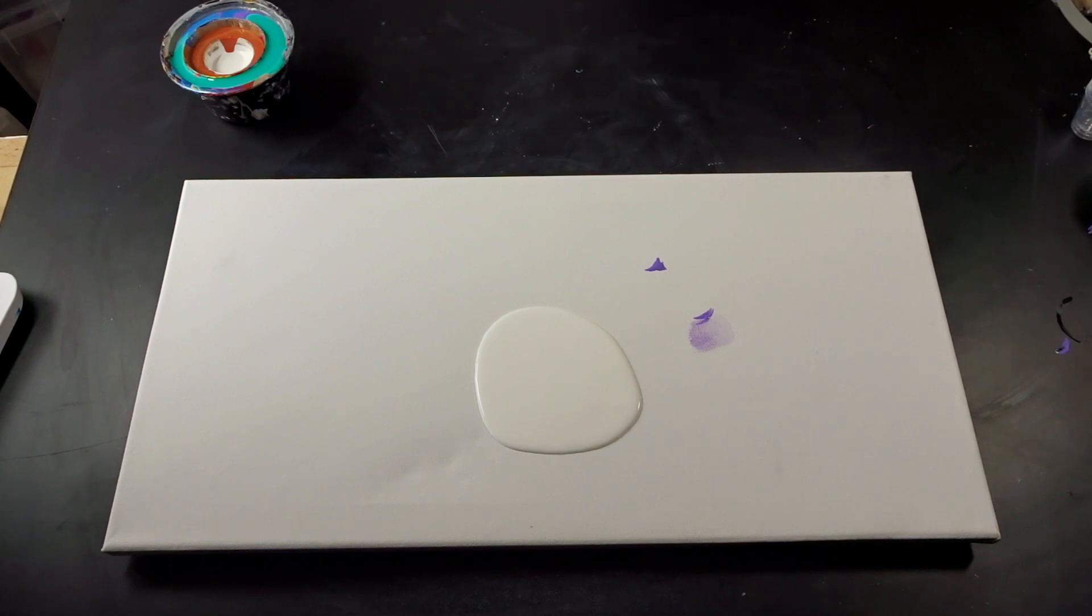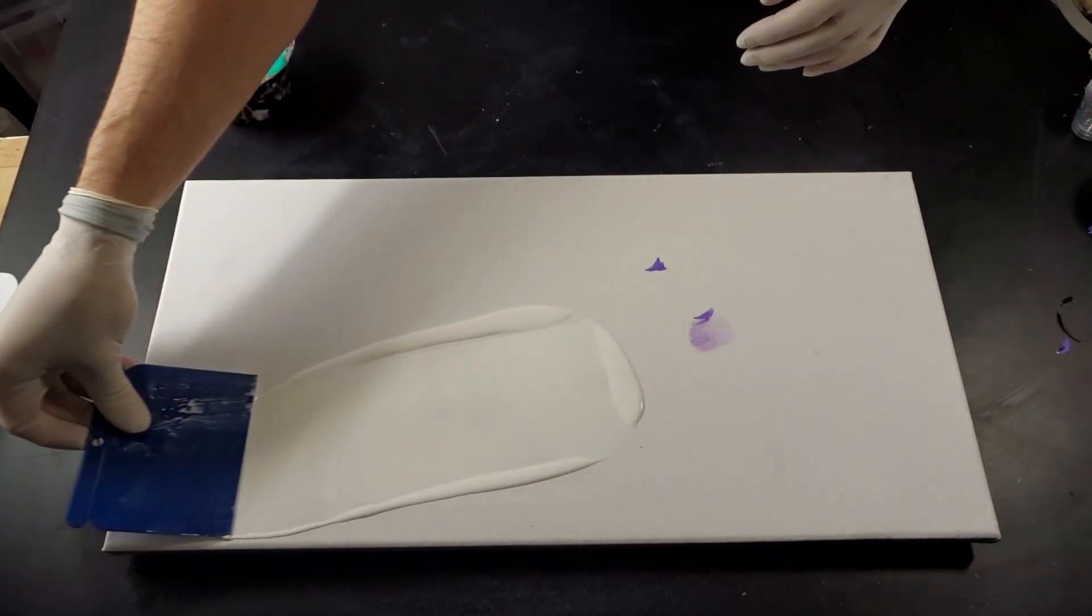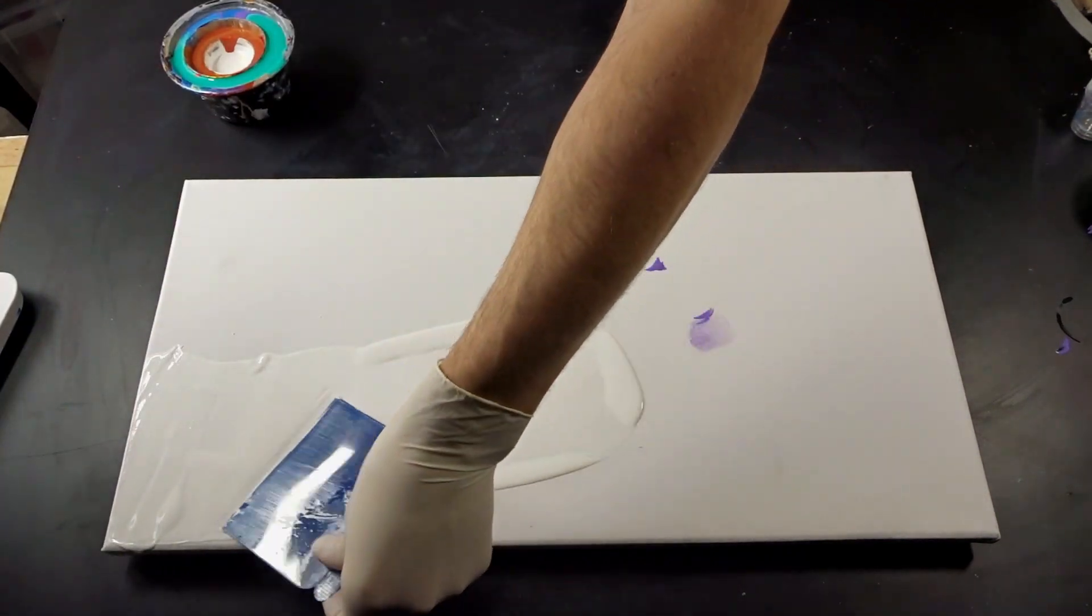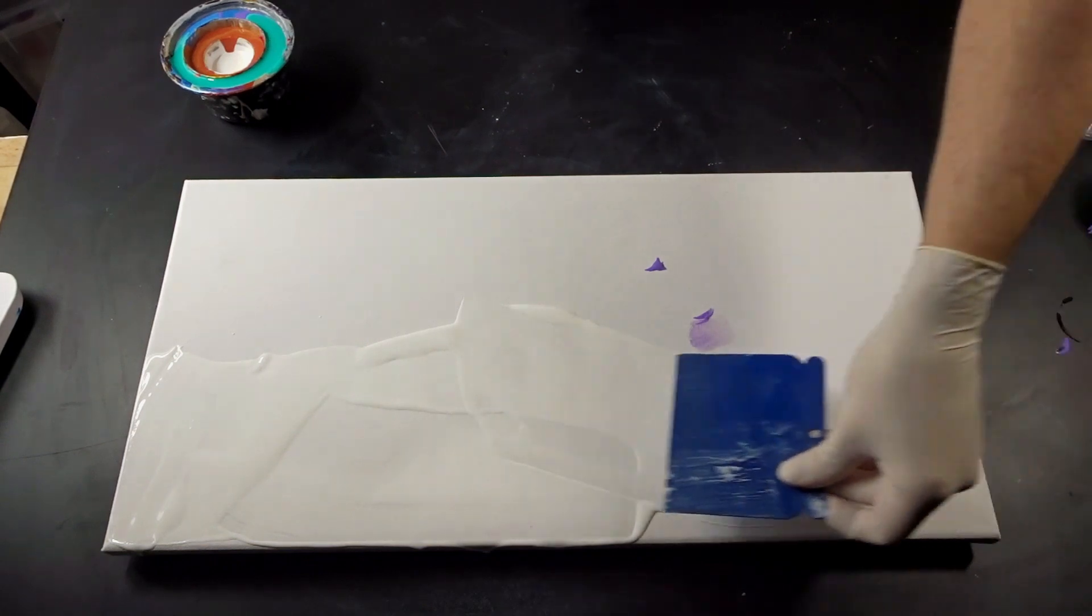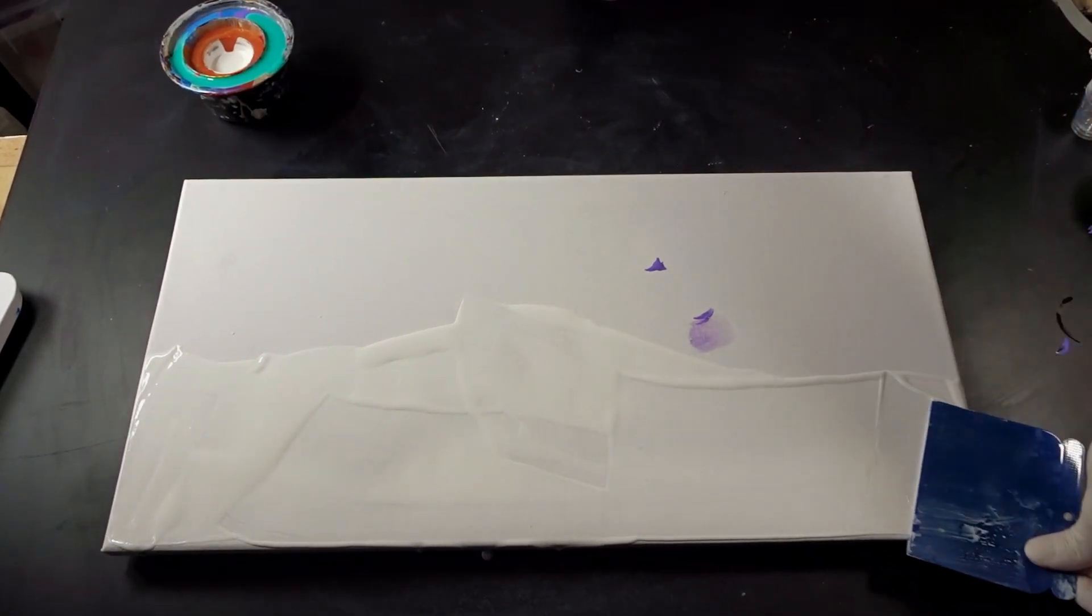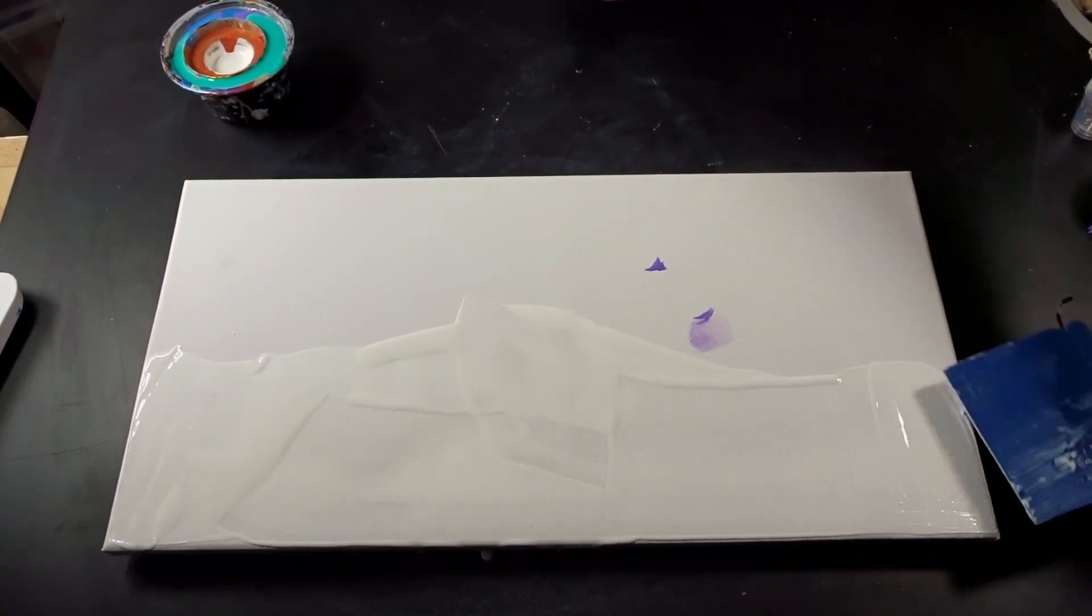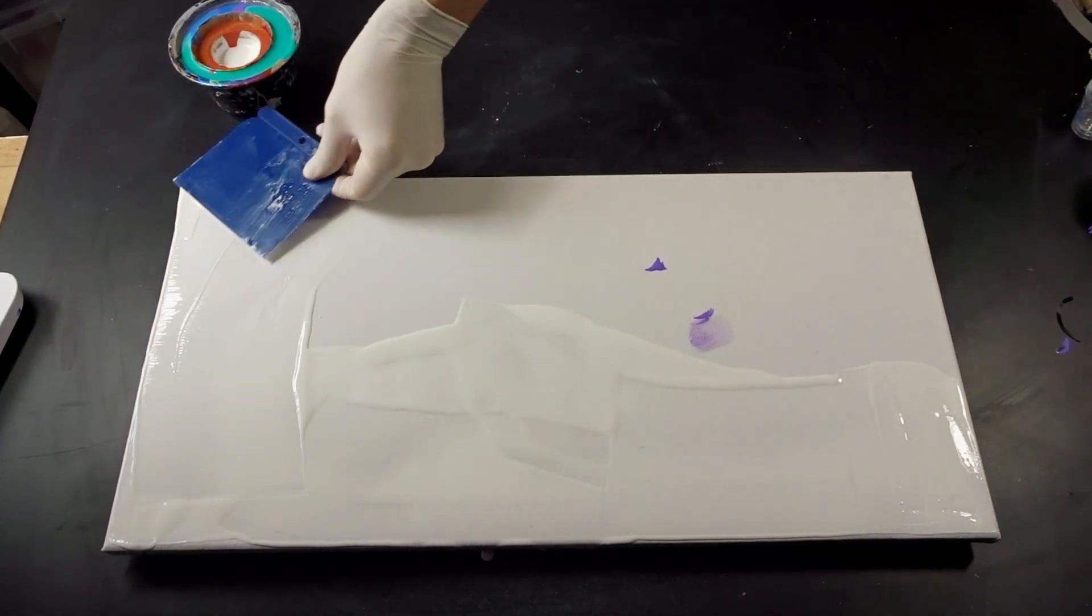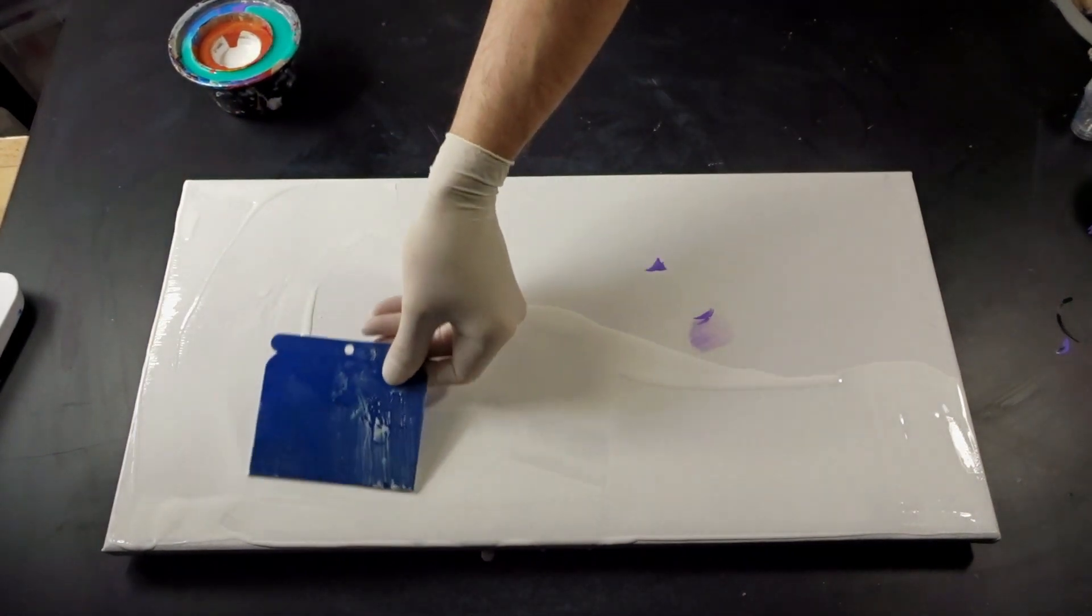It is again a 30 by 60 centimeter canvas, so double the size of the last videos and I started off with making a base layer paint of just white paint. This was just made to help the paints flow easier and I put some pinboard pins underneath of my canvas, which is no secret as well, to keep it elevated from the surface to allow the paints to drip off easier.